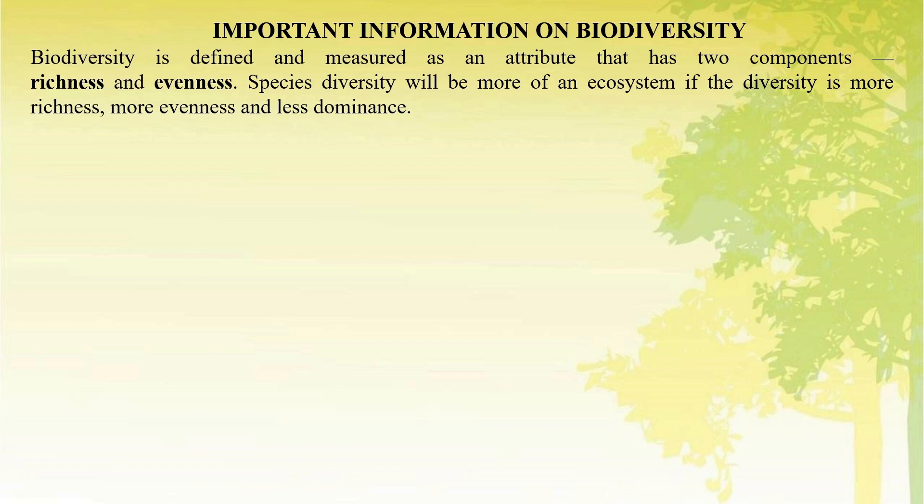Biodiversity is defined and measured as an attribute that has two components: richness and evenness. The species diversity of an ecosystem is greater when there is more richness, more evenness, and less dominance.